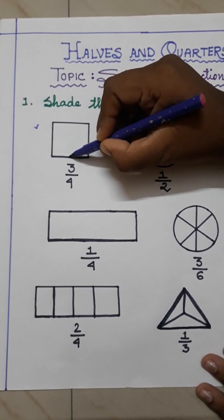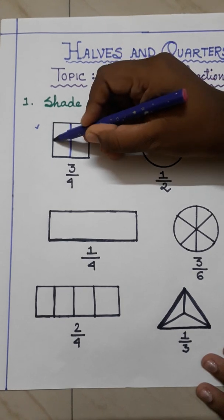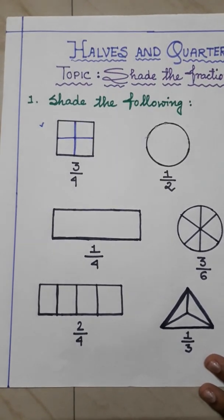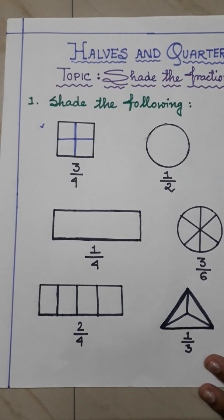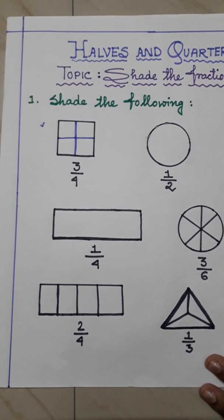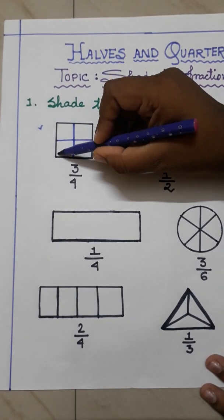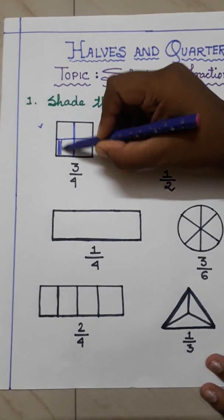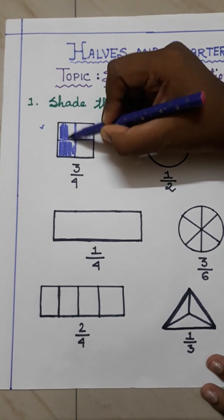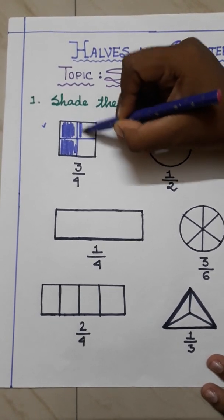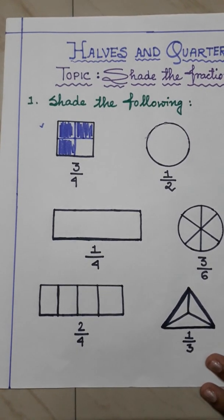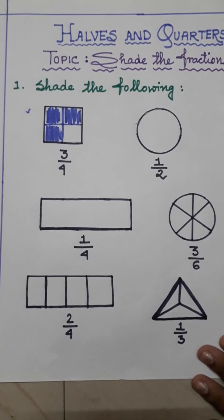So here I am dividing the square into 4 parts. Now what is in the numerator? 3. That means I will shade 3 parts of the square. So I will shade this part, another one, this part, and now this part. That means I have shaded 3 by 4 of the square.